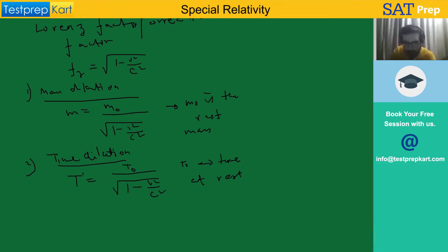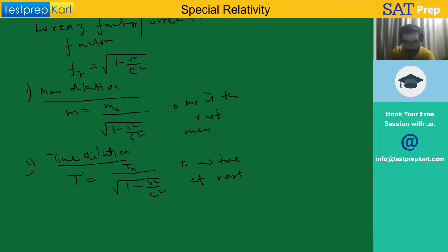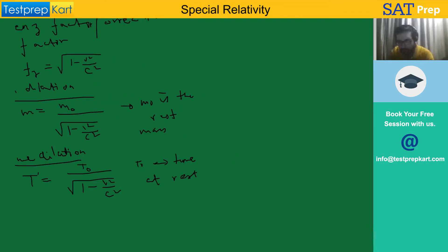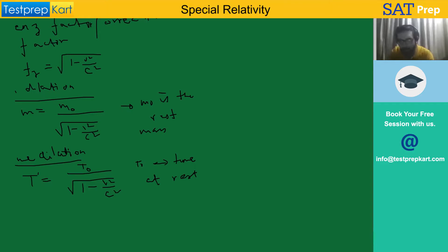Special relativity is all about finding out which is your inertial frame and with respect to which frame you are computing all the changes in mass and time. The third one is the change in length, which is length contraction.